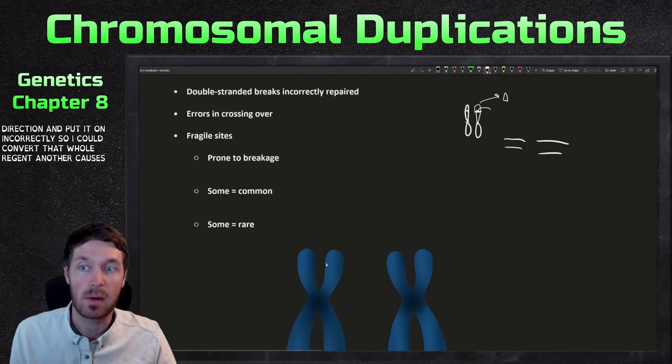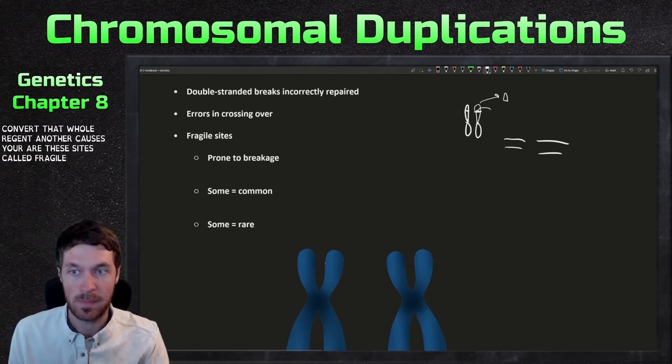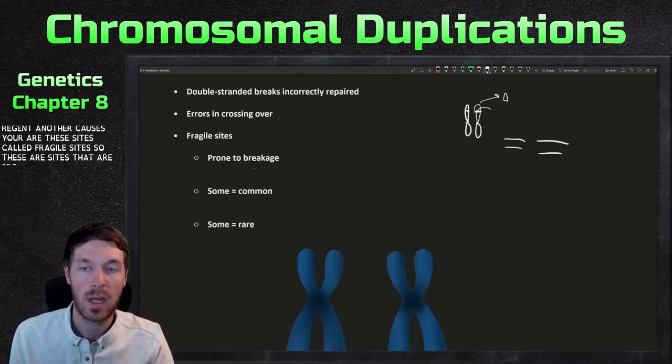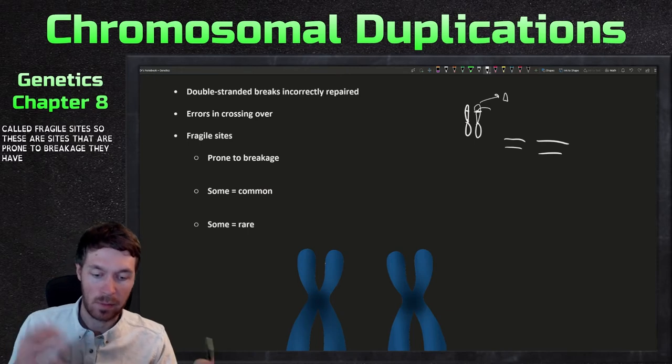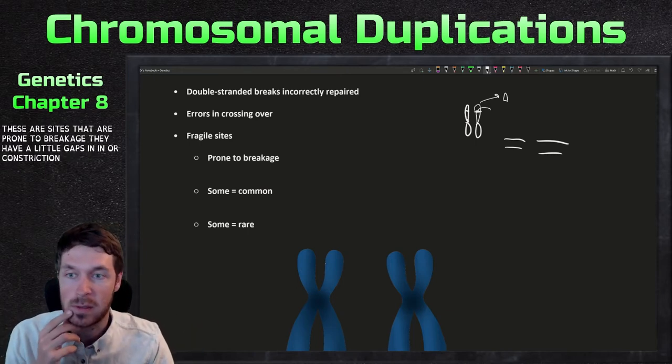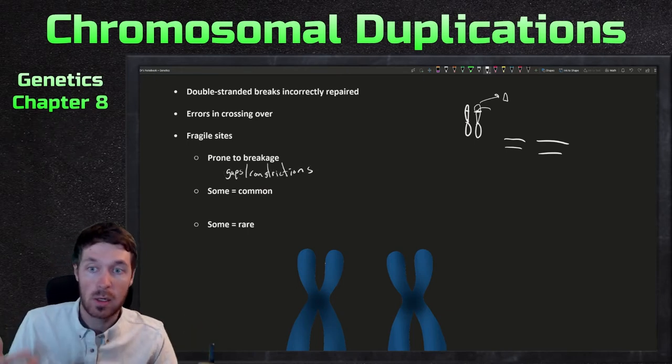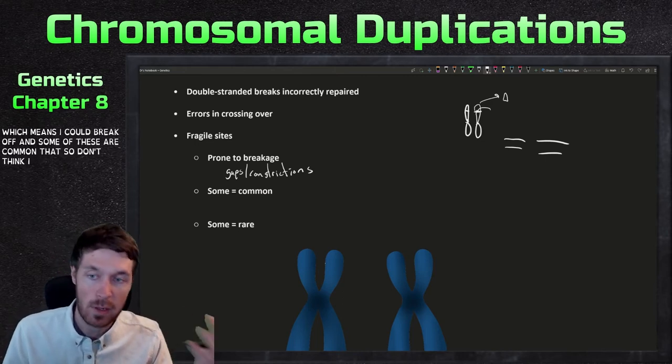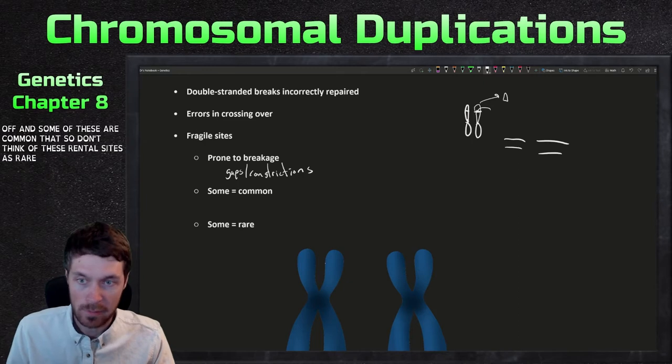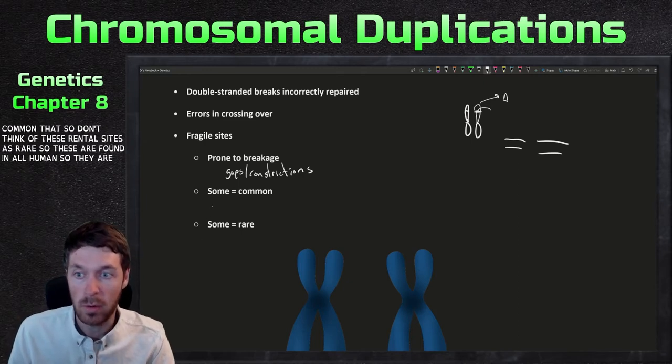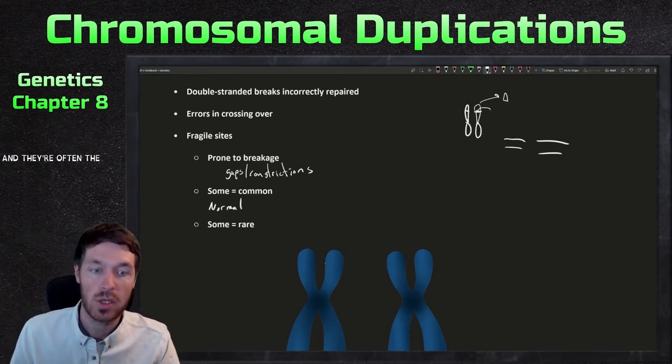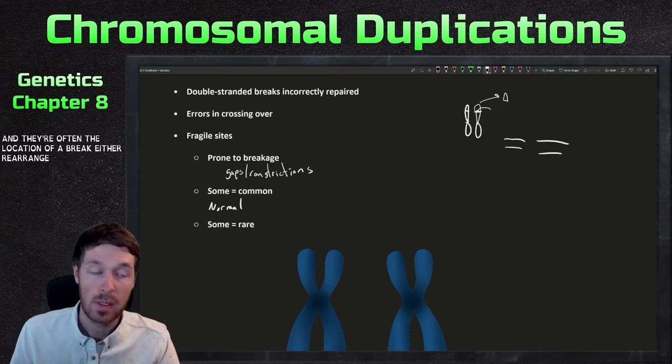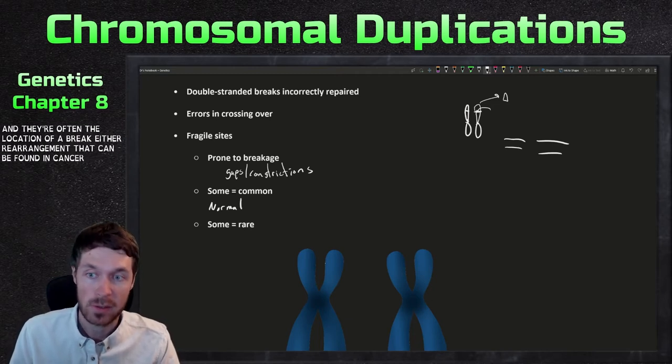Another causes here are these sites called fragile sites. So these are sites that are prone to breakage. They could have little gaps in them or constrictions, which means they could break off. And some of these are common. So don't think of these fragile sites as rare. These are found in all humans. So they are normal. And they're often the location of a breakage or rearrangement that can be found in cancer cells too.